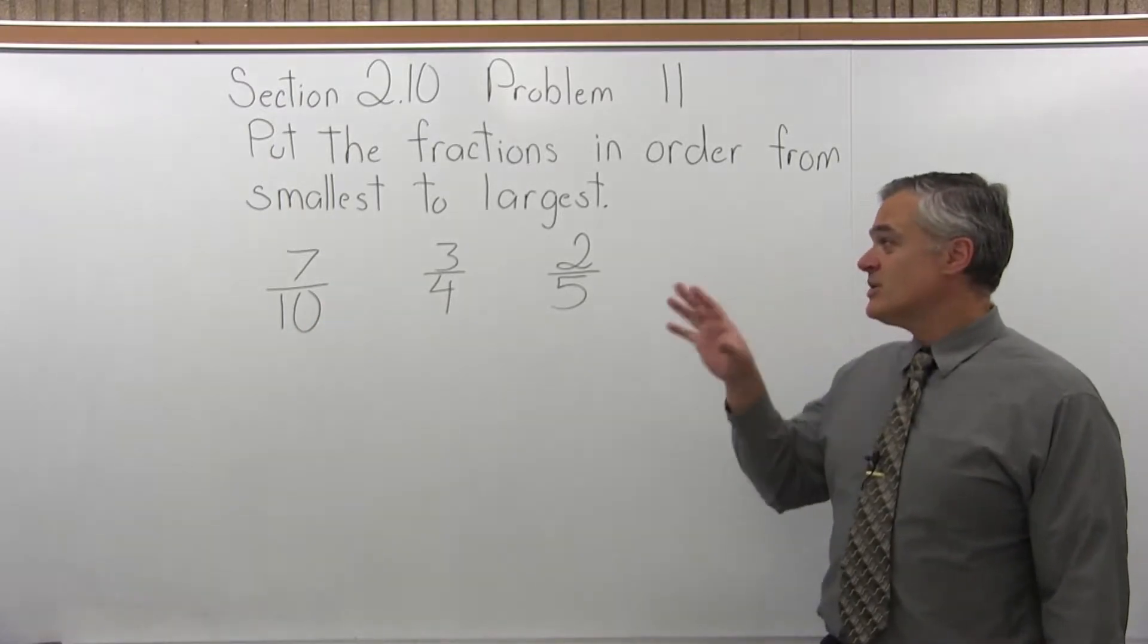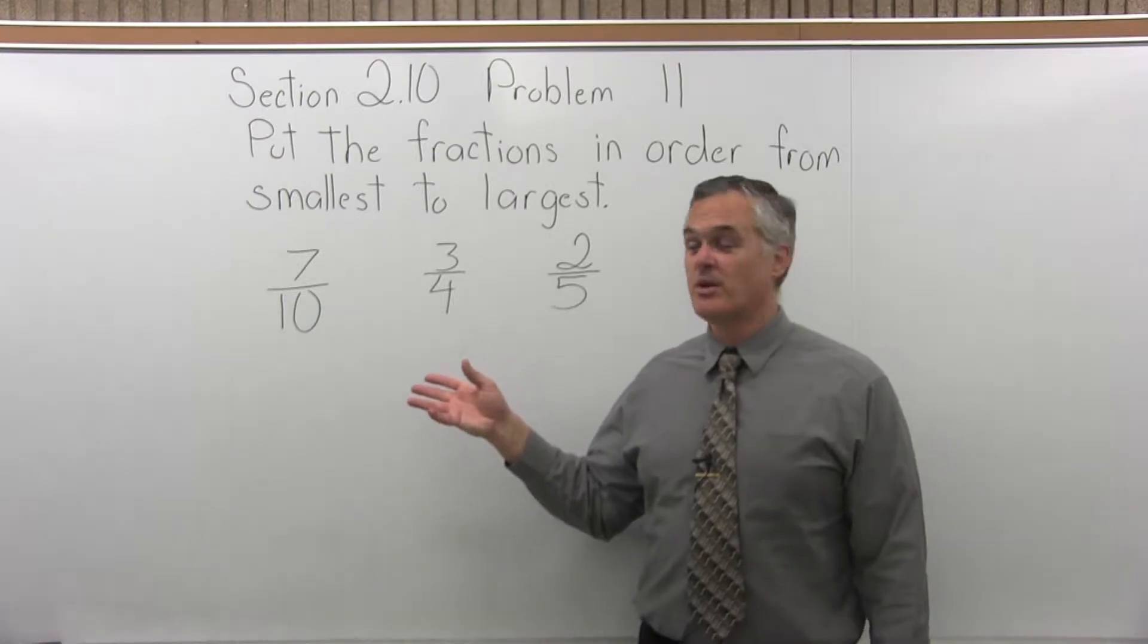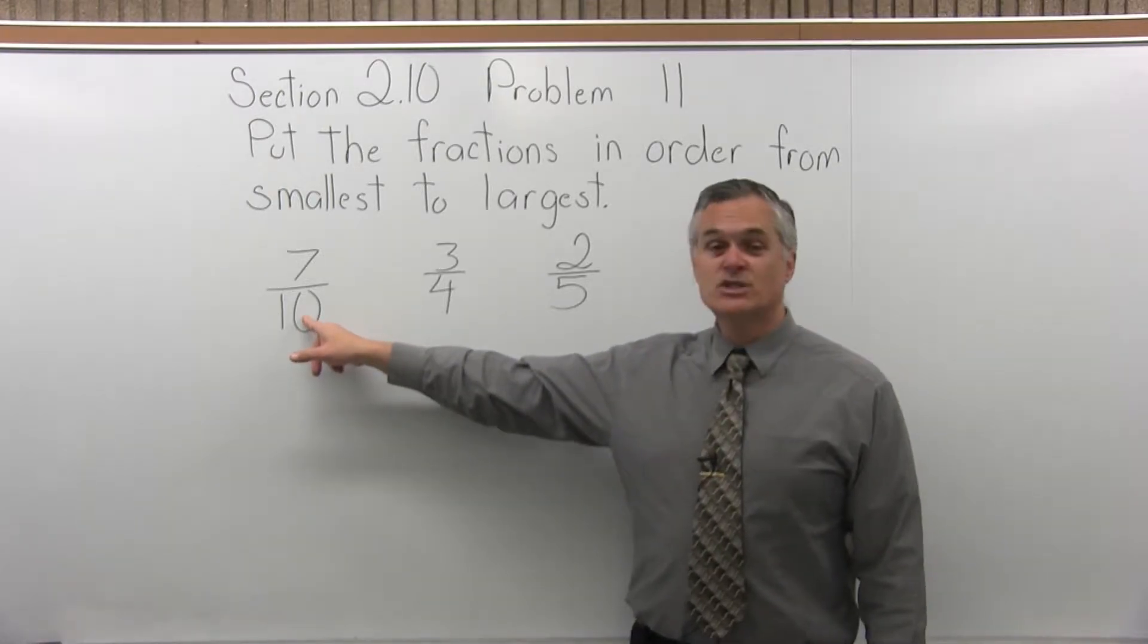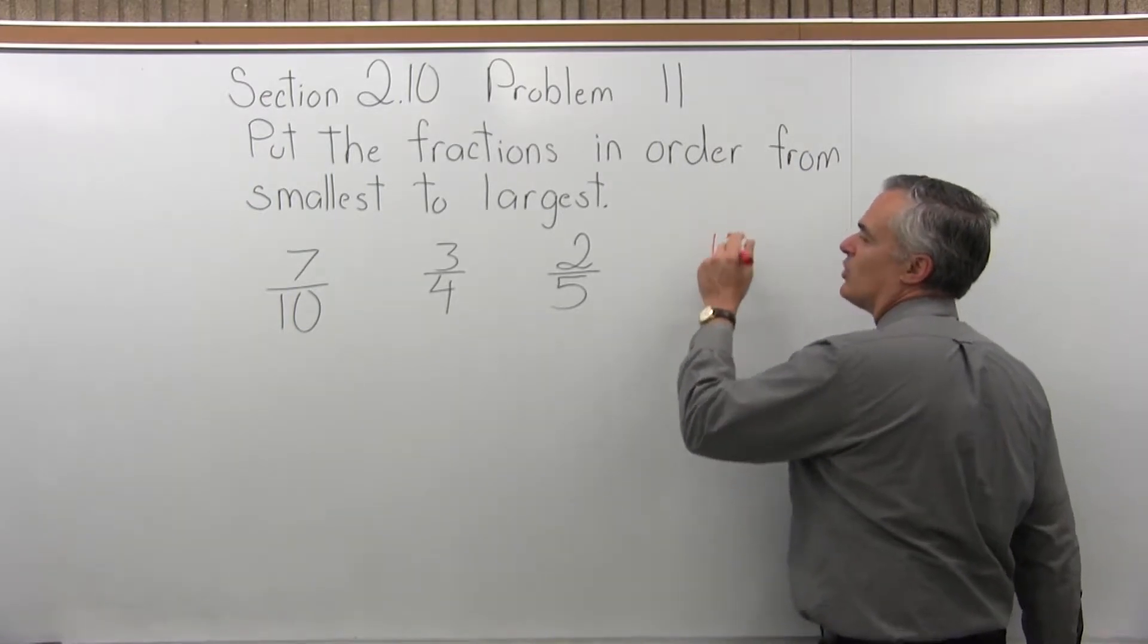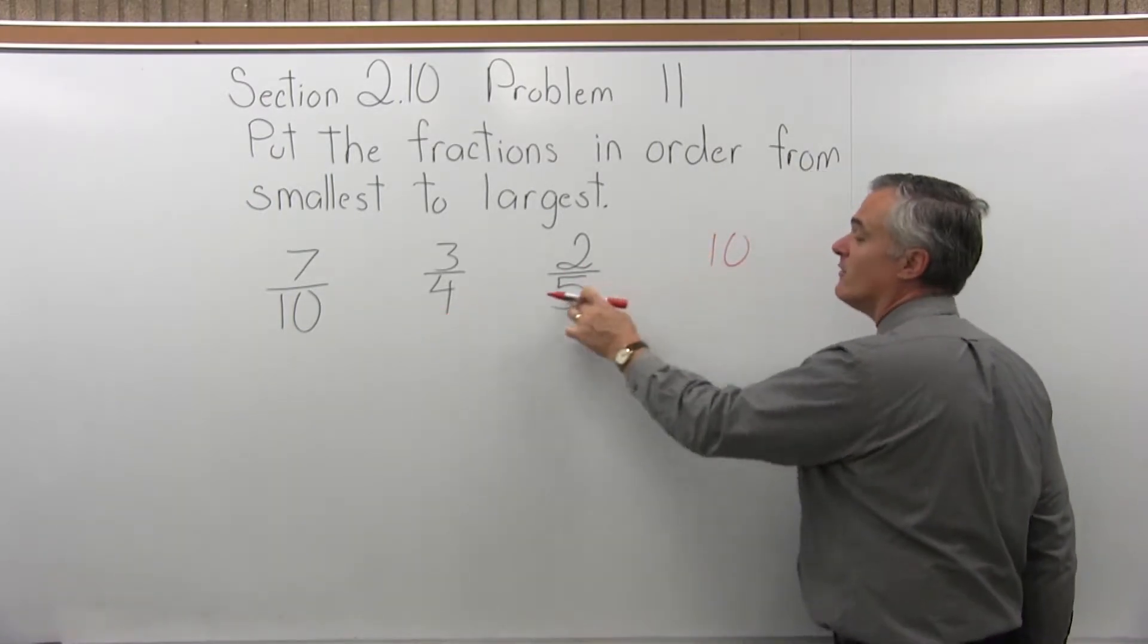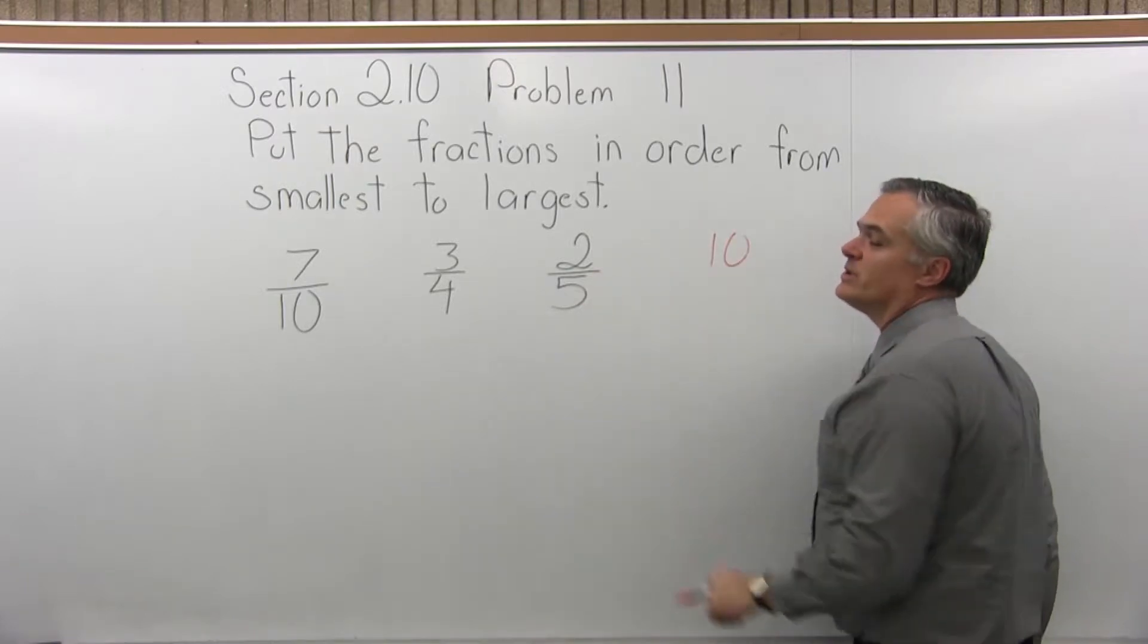So in a situation like this, it's not completely obvious what a good common denominator would be. I take the largest denominator, which is 10, and I ask myself, will the other denominators divide into 10 evenly? They won't. 5 goes in evenly, 4 does not.